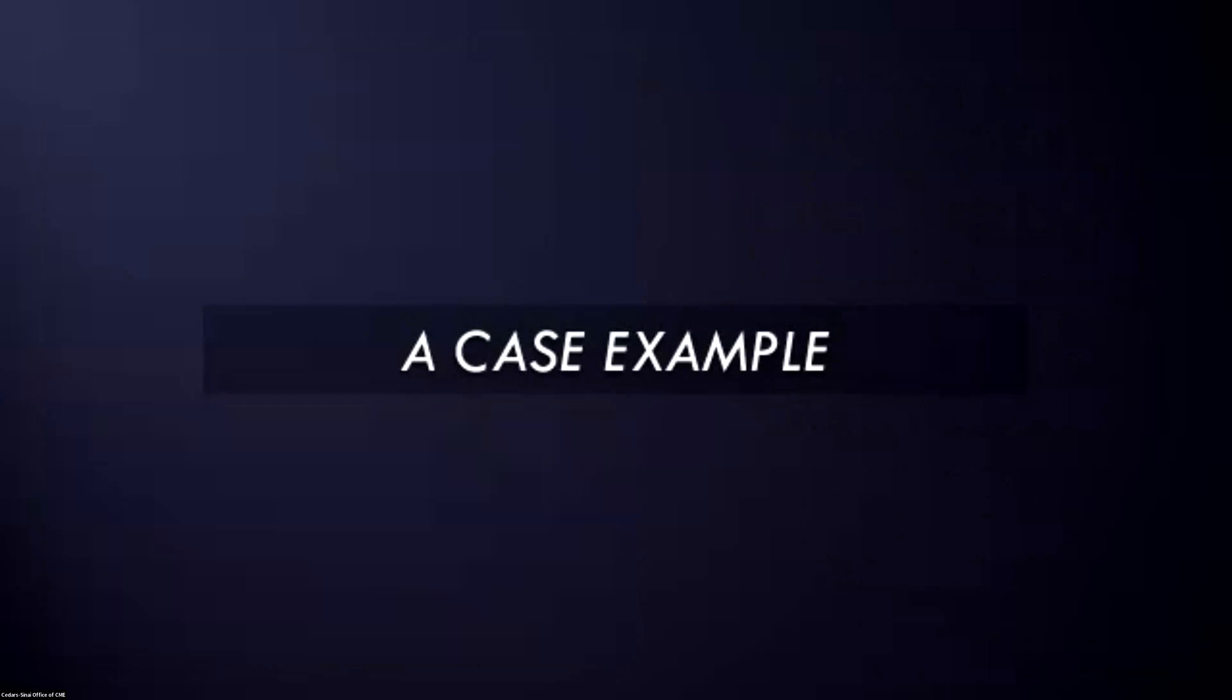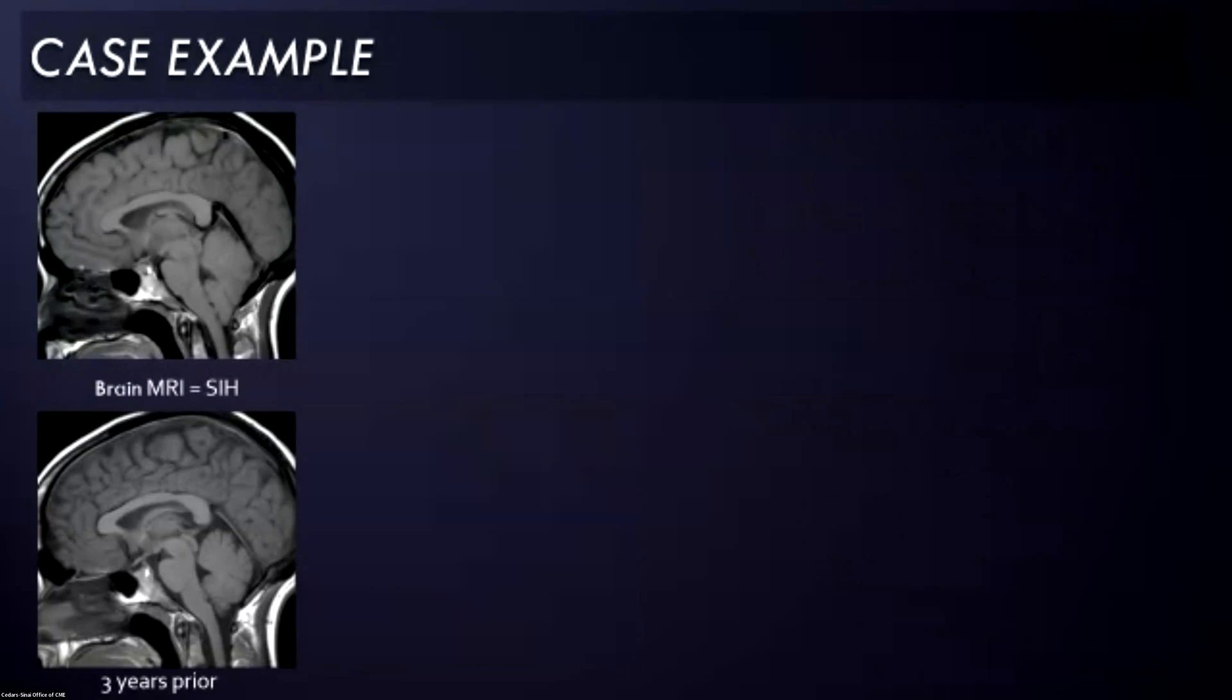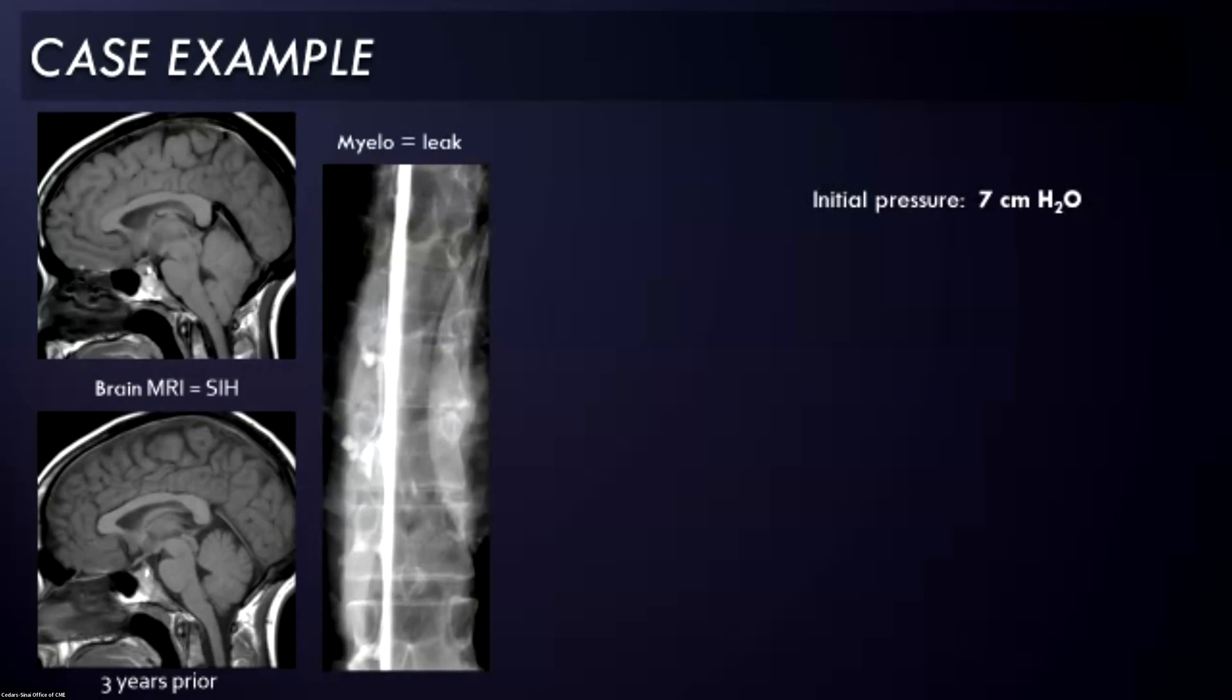We're going to start with a case example. This is a patient who I saw a number of years ago. You can see that the top image here is a brain MRI, and below was her brain MRI from three years prior. You can see there's brain sagging here. This is a clear example of spontaneous intracranial hypotension.